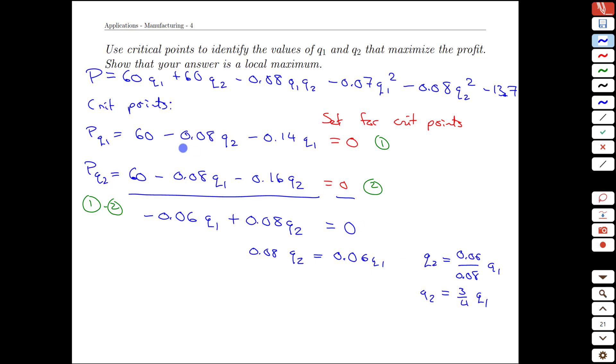So we get a nice simple relationship between q1 and q2 at the critical point. We can then use that with one of the initial equations and actually solve for a value for, say, q1. We'll call that equation 3. And we'll take 3 and insert it into 1. That'll give us 60 minus 0.08 times q2. But q2 is three quarters of q1 minus 0.14 q1s equals 0.